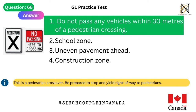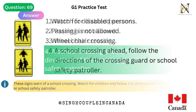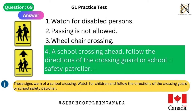Question 69. This traffic sign means: 1. Watch for disabled persons. 2. Passing is not allowed. 3. Wheelchair crossing. 4. A school crossing ahead — follow the directions of the crossing guard or school safety patroller. Answer is 4. A school crossing ahead. These signs warn of a school crossing — watch for children and follow the directions of the crossing guard or school safety patroller.